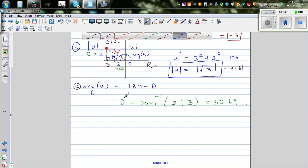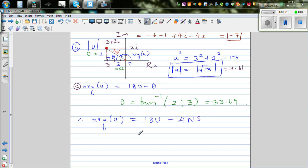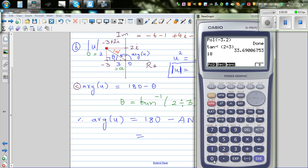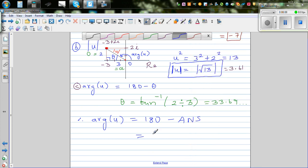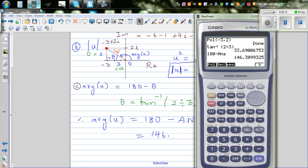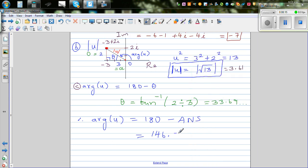Therefore, argument of u would be 180 minus this answer. Let's calculate: 180 minus shift answer, which is 146.309. That's what we got: 146.31 degrees.